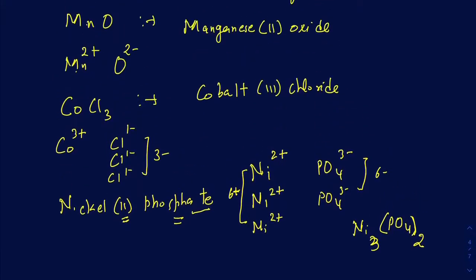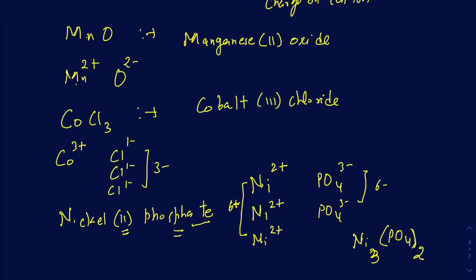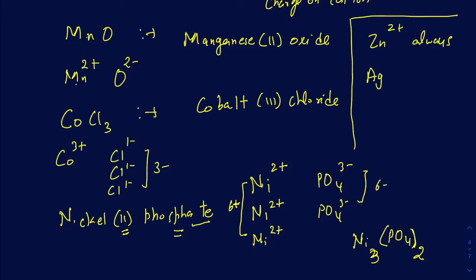For the most part, transition elements have variable charges. There are a few with fixed charges: zinc is always 2+ and silver is always 1+. So sometimes you'll see zinc or silver in an ionic compound name without Roman numerals, because their charges are fixed.